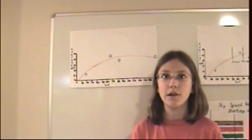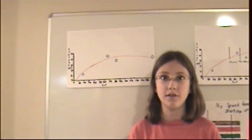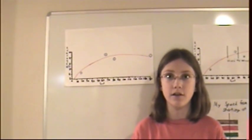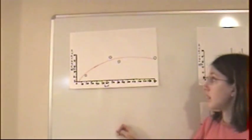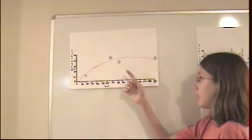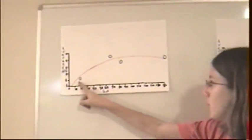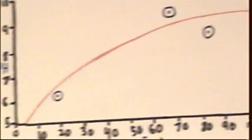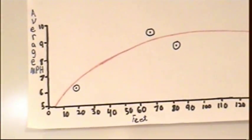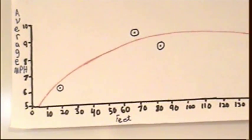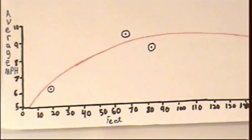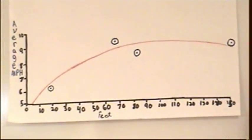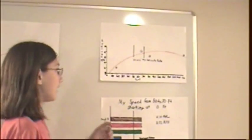For my physics project, I did the study of velocity. As part of my velocity experiment, I measured out different distances and tried to find how fast I could go for each distance. Using the speeds I got from running, I calculated my average miles per hour and plotted them onto a chart. For 18 feet, I was going about 6 miles per hour. For 68 feet, I was going about 9.3 miles per hour. For 84 feet, I was going about 8.4 miles per hour. And for 150 feet, I was going about 9.1 miles per hour.